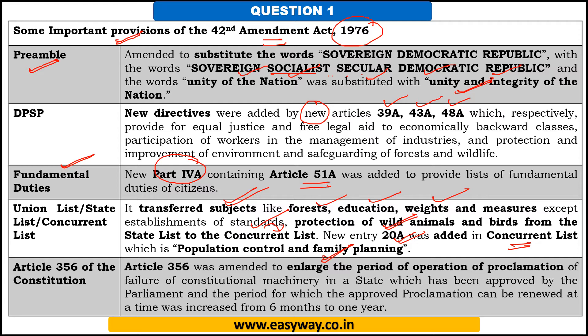There was also an amendment to Article 356 of the constitution, which deals with President's Rule in a state. The duration up to which President's Rule can go on without renewal was six months, and that was extended to one year through this particular amendment.